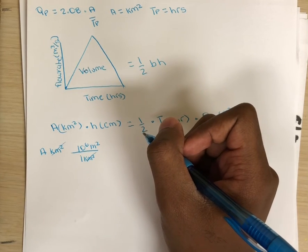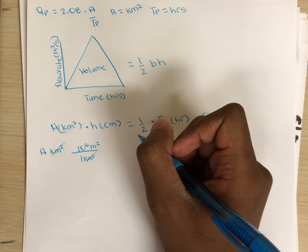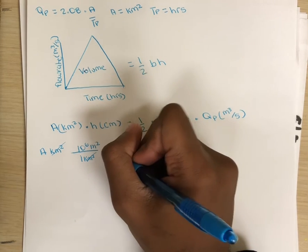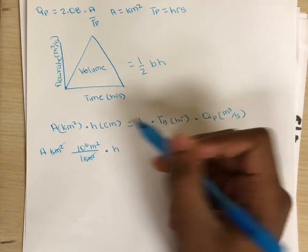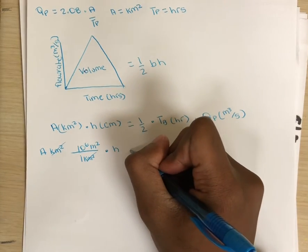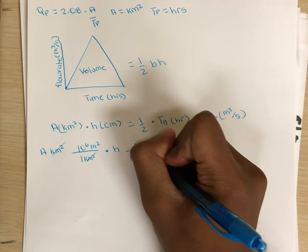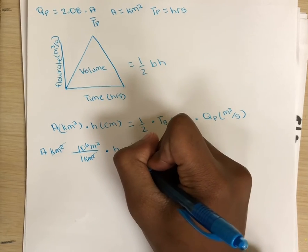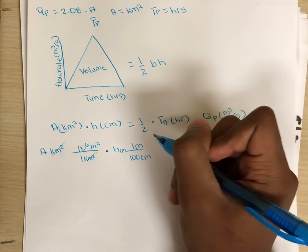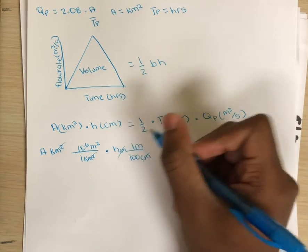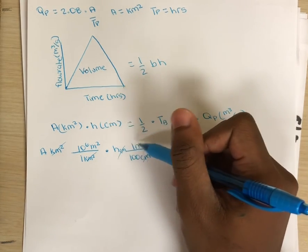Let's do the same with the depth of flow rate. We'll convert centimeters to meters. So there are 100 centimeters in one meter. The centimeters cancel out with each other, leaving the depth to be just meters.